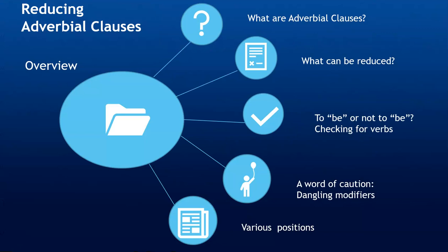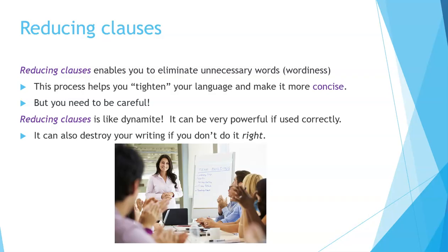Here's an overview of what you will see in this lesson: what are adverbial clauses, what can be reduced, to be or not to be, checking for verbs, a word of caution, dangling modifiers, and various positions. Reducing clauses enables you to eliminate unnecessary words — that's called wordiness. This process helps you tighten your language and make it more concise. But you need to be careful. Reducing clauses is like dynamite: it can be very powerful if used correctly, but it can also destroy your writing if you don't use it right.